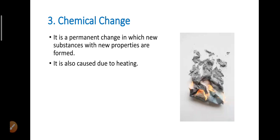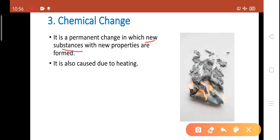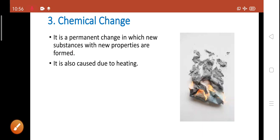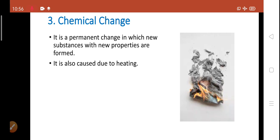The last one was chemical change. It is a permanent change in which new substances are formed with new properties. It is also caused due to heating. Here, in this example, you can see the paper is burning. It means the paper is changing to a new product that is ash along with the release of some gases.